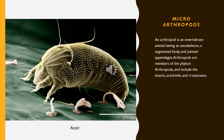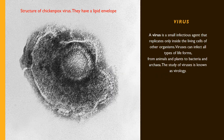An arthropod is an invertebrate animal having an exoskeleton, a segmented body, and joined appendages. Arthropods are members of the phylum Arthropoda and include insects, arachnids, and crustaceans.